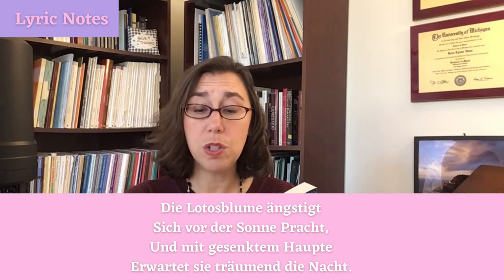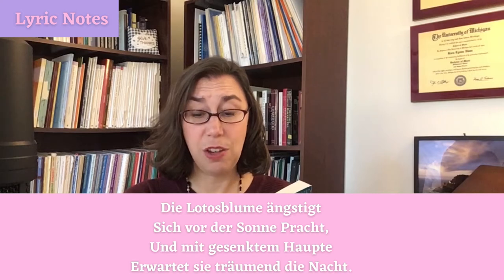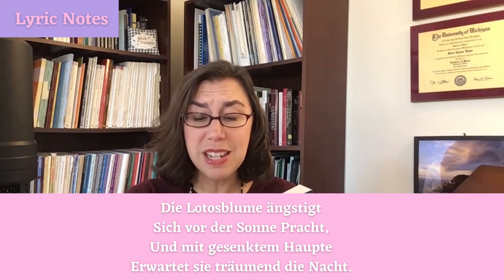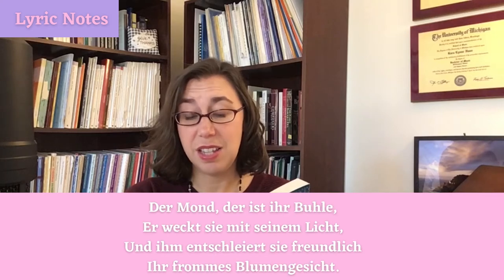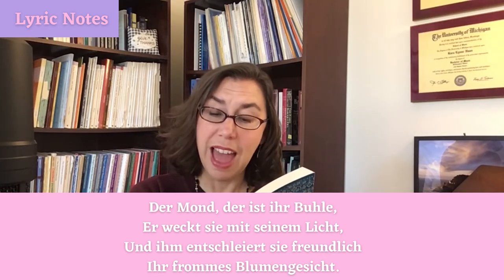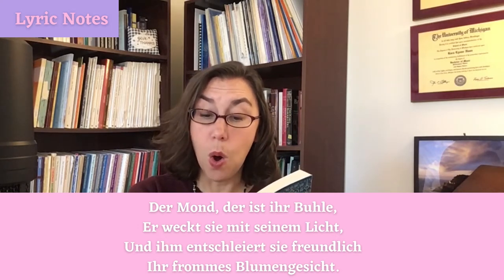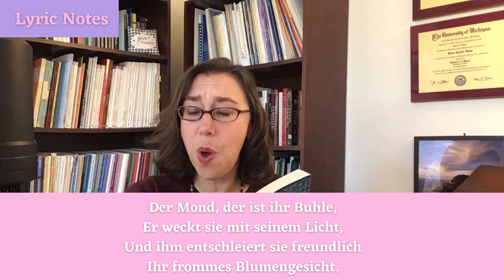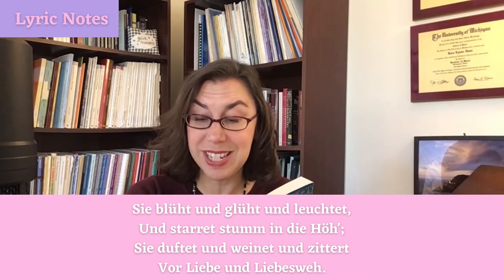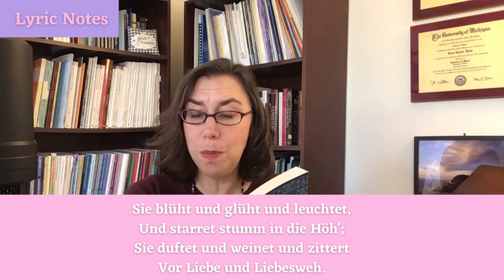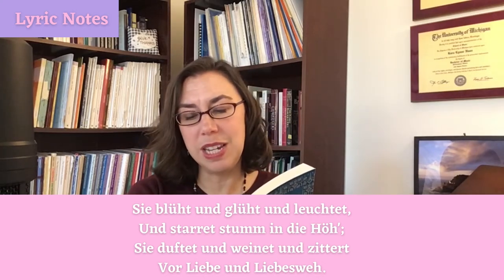Now I'll start lyric notes by reading the German text of Die Lotusblume. Die Lotusblume ängstigt sich vor der Sonne Pracht und mit gesenktem Haupte erwartet sie träumend die Nacht. Der Mond, der ist ihr Buhler, erweckt sie mit seinem Licht und ihm entschleiert sie freundlich ihr frommes Blumengesicht. Sie blüht und glüht und leuchtet und starret stumm in die Höhe. Sie duftet und weinet und zittert vor Liebe und Liebesweh.